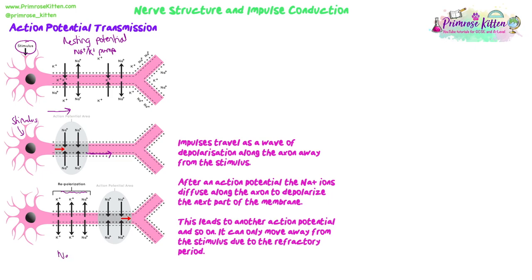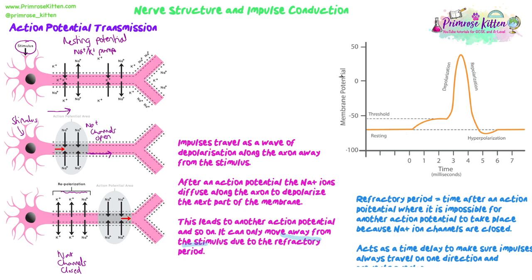Once the action potential is finished and repolarization starts — sodium is being pumped out and potassium is leaving through its own ion channels — some sodium diffuses to the right along to the next part of the axon down its concentration gradient, where sodium ion channels are open. This makes that section of membrane slightly more positive, triggering a generator potential that hopefully reaches threshold potential, opening the sodium ion channels so sodium rushes in, producing the next action potential in the next section. This repeats all the way along the neuron until we reach the end.